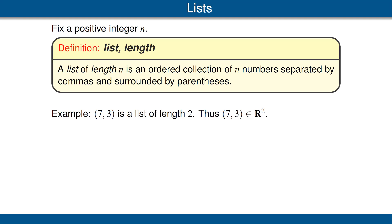This list has length 2. Thus, (7, 3) is an element of R², which is defined equal to the set of lists of real numbers of length 2.